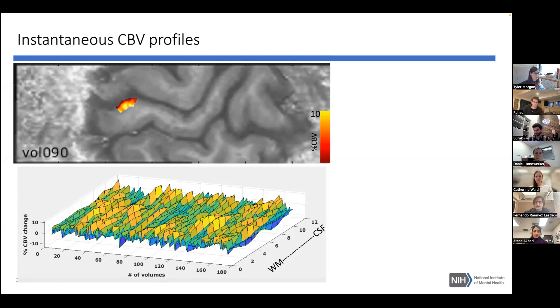One can look at the ongoing CBV profiles, and I'd like to show this kind of 3D map. You see different volumes on the top with different profiles, and it's an ocean of profiles changing in time.